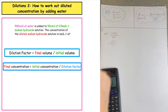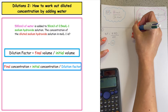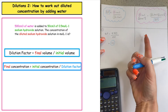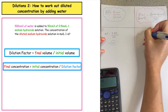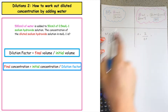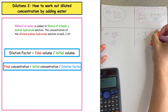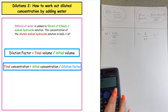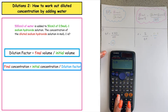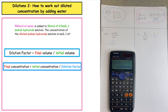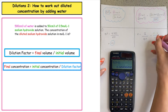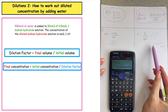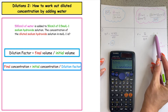That's step number one. The next step is to calculate the concentration of the diluted sodium hydroxide — that's the final concentration. Final concentration is equal to initial concentration divided by dilution factor. The dilution factor is 11, and the initial concentration is 0.5 moles per litre. So 0.5 divided by 11 gives a final concentration of 0.045 moles per litre. We can double-check that the diluted concentration is lower than the initial.